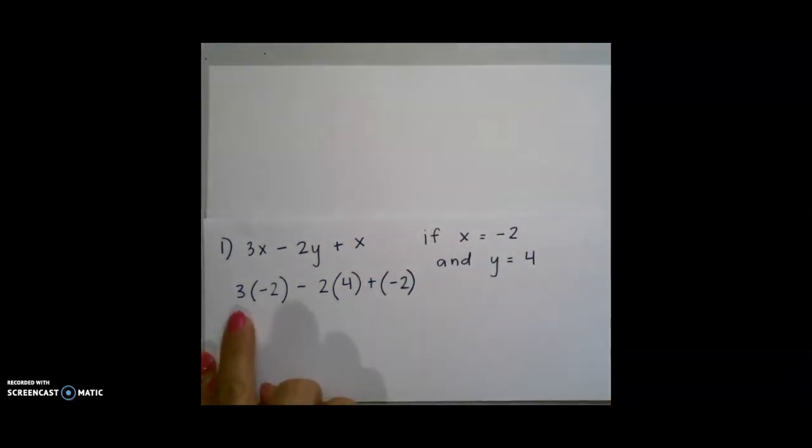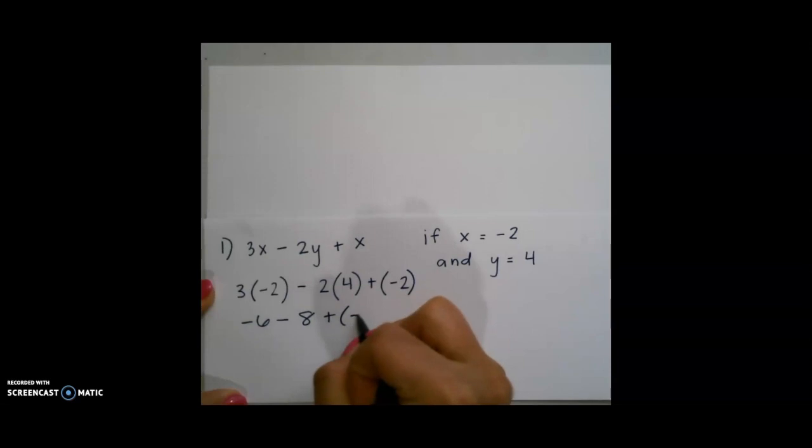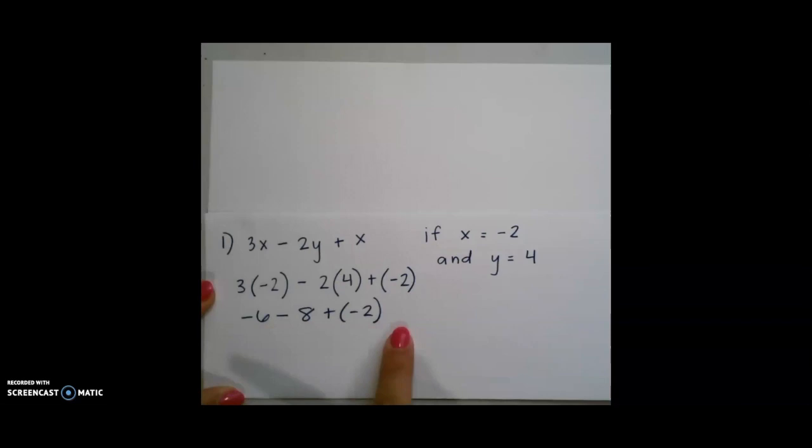Remember that when you see a number next to a set of parentheses, this means to multiply. I put a set of parentheses around this number because it's negative and there's a plus sign in front of it. 3 times negative 2 is negative 6. 2 times 4 is 8 plus negative 2 at the end. Then we need to use our integer rule to go from left to right. Negative 6 minus 8 is just like negative 6 plus negative 8, which would give us negative 14. Plus negative 2 will give us negative 16.